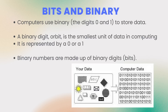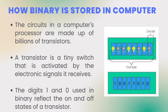We covered number systems in a previous video and now you know that computers store their data using the binary system that has zeros and ones. Binary numbers are made of binary digits called bits. Whatever data we give to the computer is stored as ones and zeros, according to ASCII and Unicode as discussed in the previous video.